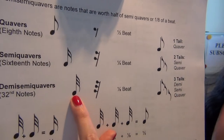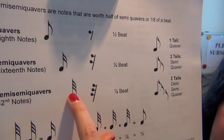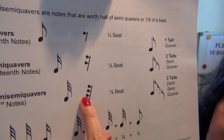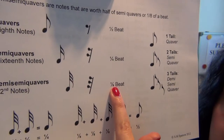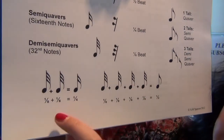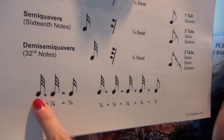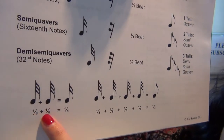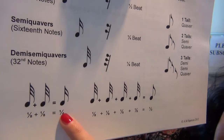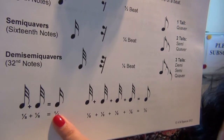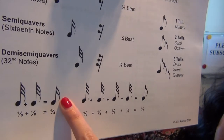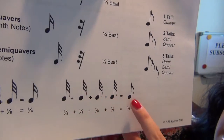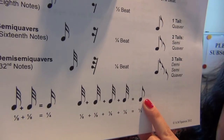Demisemiquavers — there they are — they've got three tails to them. This is the rest, which also has the equivalent of three tails on it, and this is worth an eighth of a beat. To break that down further, two demisemiquavers — an eighth plus an eighth — would be the equivalent of a semiquaver or 16th note. If you've got four demisemiquavers or four 32nd notes, that's going to equal the same as one quaver.